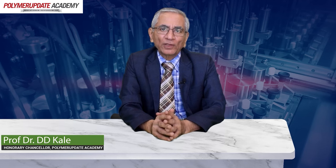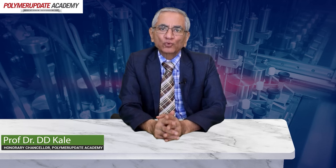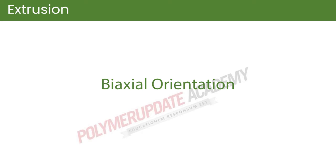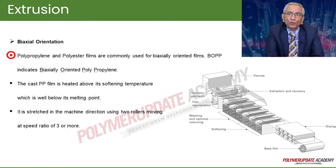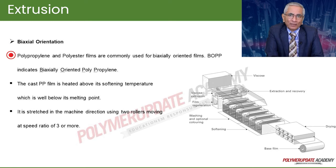Hello everyone. Today we shall see extrusion, which is one of the most important operations in polymer processing. We can also go for bi-axial orientation. Polypropylene and polyester films are commonly used for bi-axial oriented films. BOPP indicates bi-axial oriented polypropylene.